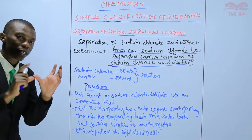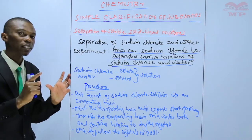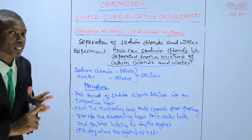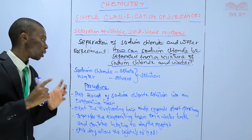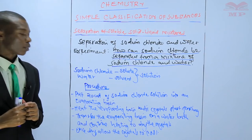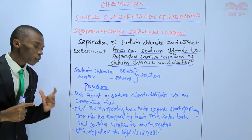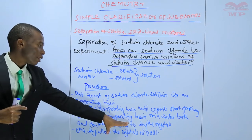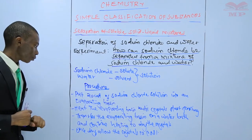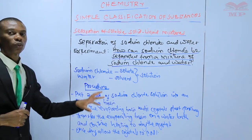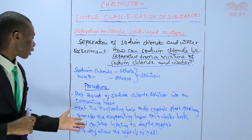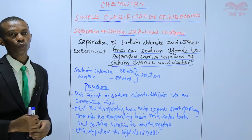Remember, this evaporating basin contains a solution — meaning the sodium chloride is dissolved in water. You heat this basin until crystals start forming. After you see the crystals start forming, transfer the evaporating basin onto a water bath and continue heating to dry the crystals. Once the crystals are dry, allow them to cool.